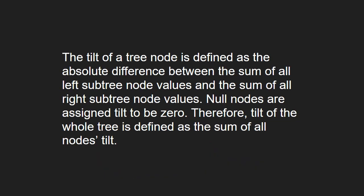The tilt of a tree node is defined as the absolute difference between the sum of all left subtree node values and the sum of all right subtree node values. Null nodes are assigned a tilt of 0. Therefore, the tilt of the whole tree is defined as the sum of all the nodes' tilt.